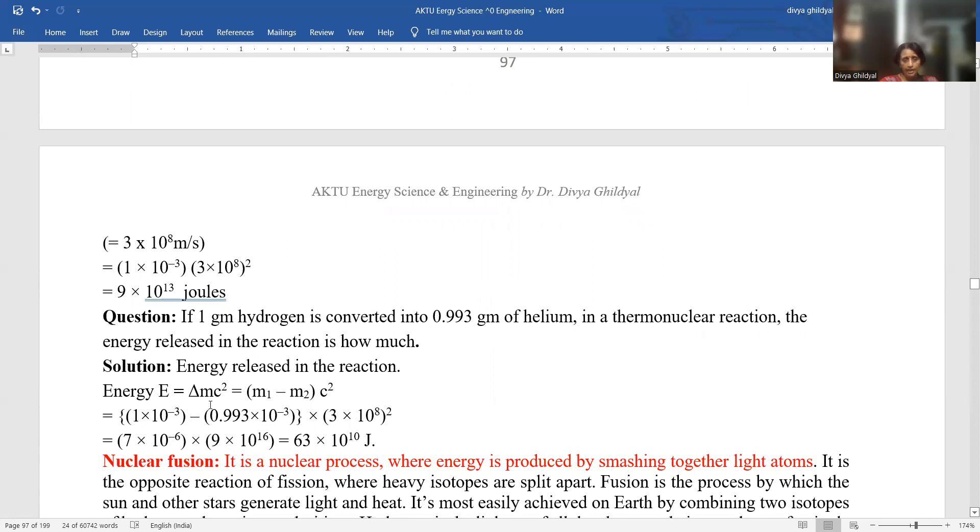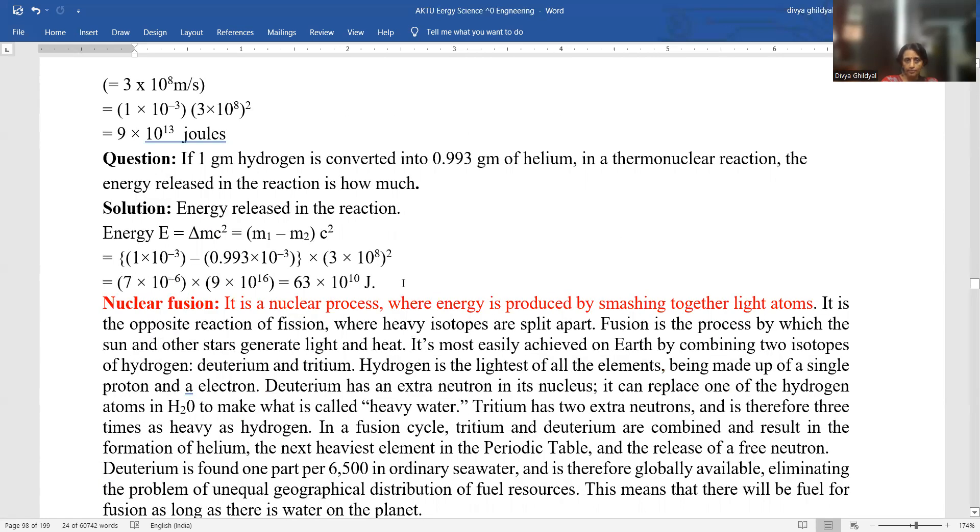If 1 gram hydrogen is converted to 0.993 gram of helium in a thermonuclear reaction, the energy released in the reaction is how much? Energy released is equal to del mc square, where del m is m1 minus m2. How much is m1, 1 gram and m2 is 0.993 grams. I am going to change this gram into kg, into 10 to the power of minus 3 and c is velocity of light, 3 into 10 to the power of 8. I will put these values and a simple subtraction and my answer is there.